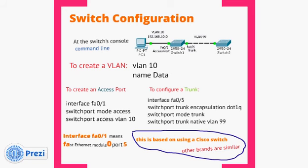To create an access port for an end device, you'd go 'interface FA0/1' — FA is short for Fast Ethernet in the Cisco world, module 0, port 1. Then you put the switch port into access mode: 'switchport mode access'. Then you say 'switchport access vlan 10' to assign VLAN 10 to this port. That's for end devices like PCs, servers, PBXs, and things like that.